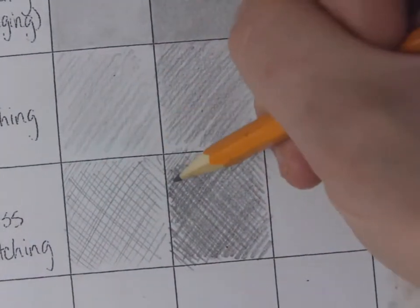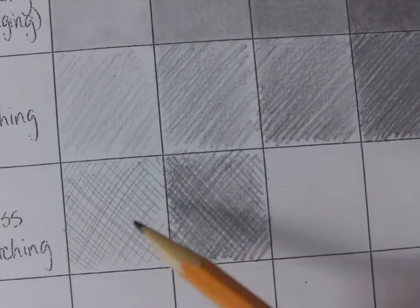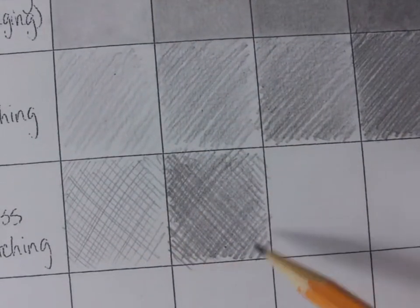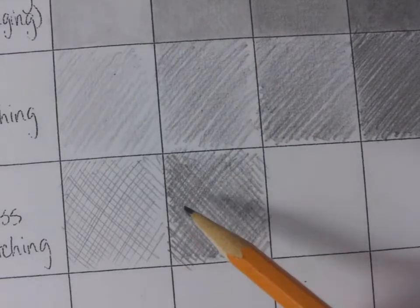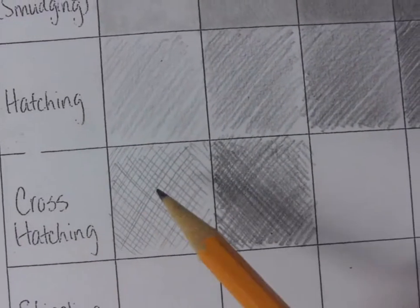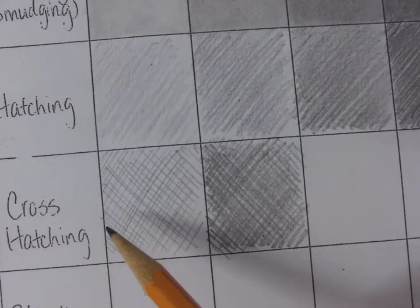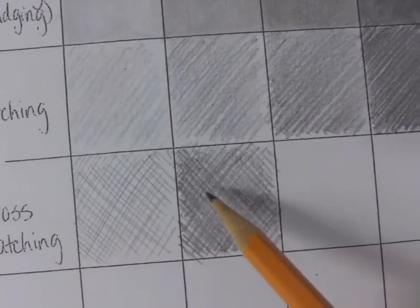Okay, you can tell that we got dark pretty fast with cross hatching because we went from two layers to four right with even really thinking about it. So an experienced illustrator that wants to do a really quick sketch might go straight to cross hatching because it works really quickly to get your different values.